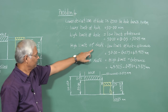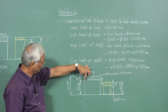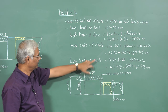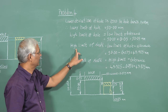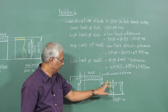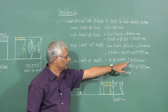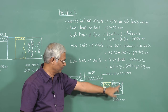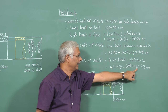The higher limit of the shaft equals the lower limit of the hole minus the allowance: 50 minus 0.075 equals 49.925mm. To get the lower limit of the shaft, subtract the tolerance from the higher limit: 49.925 minus 0.050 equals 49.875mm.